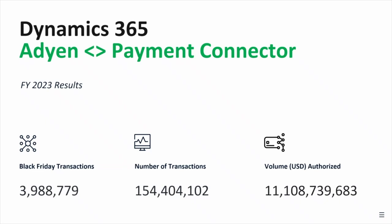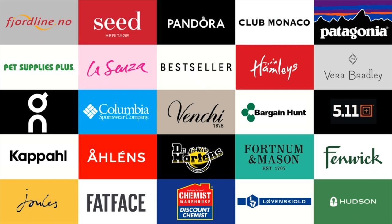We saw 87% year-over-year growth with the volume processed through the integration. It's very exciting to see the continued adoption of Dynamics 365 Commerce, as well as customers choosing ADN as part of those implementations. The merchants using the integration include some of the largest and most well-known brands in the world, such as Pandora, Patagonia, Columbia Sportswear, and Bestseller — retailers operating at a global scale, conducting business across all channels with demanding shoppers expecting seamless experiences both online and offline.